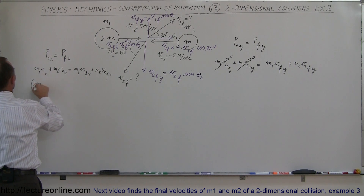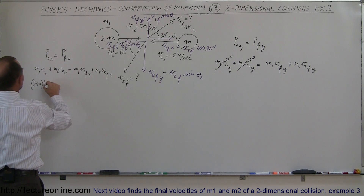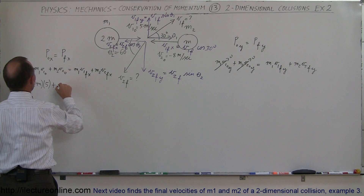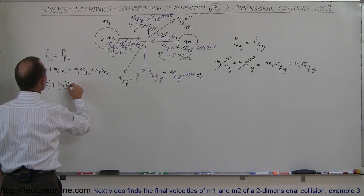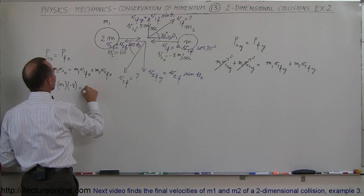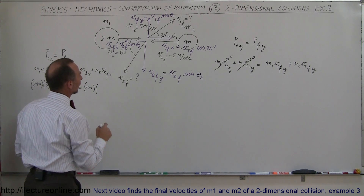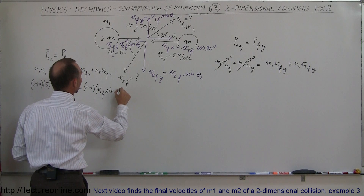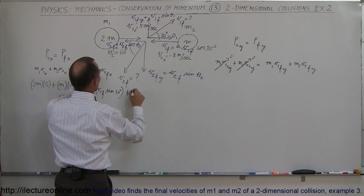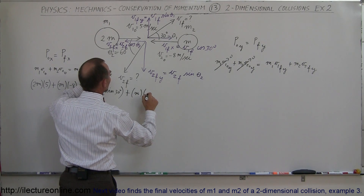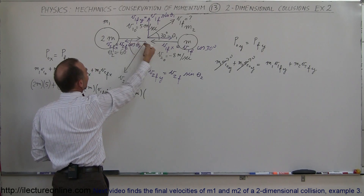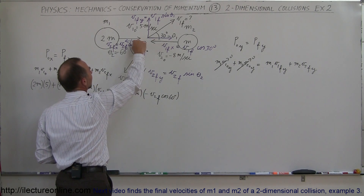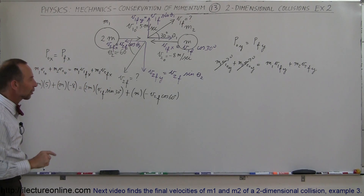Plugging in numbers for the x-direction: m1 is 2m and v1_initial is positive 5, m2 is m and v2_initial is negative 8 m/s. So: 2m·(5) + m·(-8) = 2m·(v1_final·sine 30°) + m·(-v2_final·cosine 60°). Notice v2 final in the x-direction is negative, so we include a minus sign. This gives us our x-direction equation.